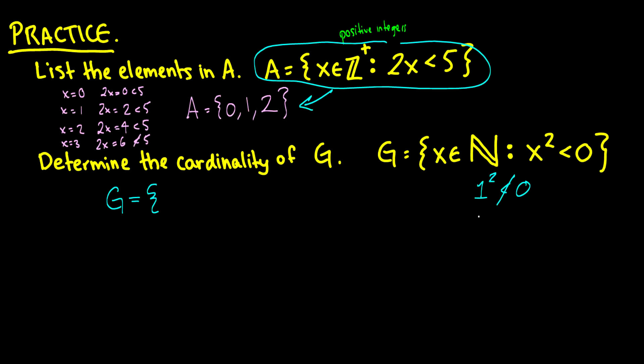In fact, we know that any number squared is not going to be less than 0. Therefore, G is going to be empty.